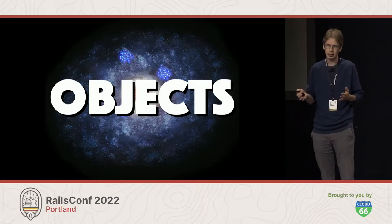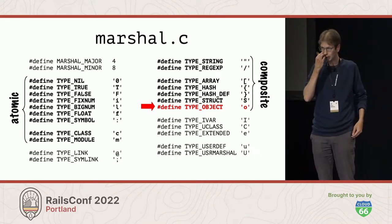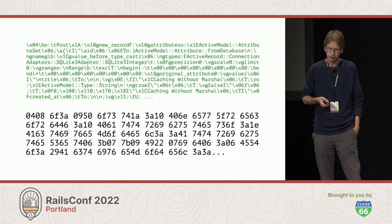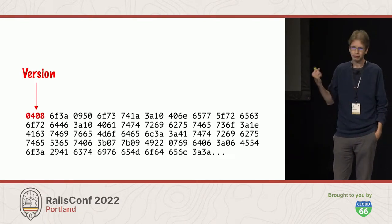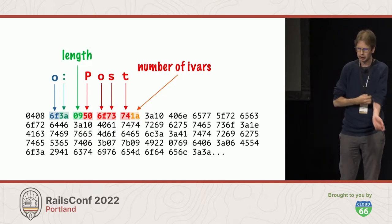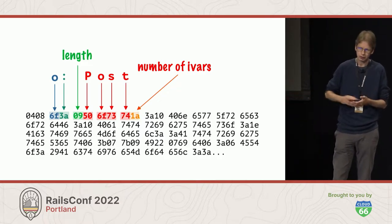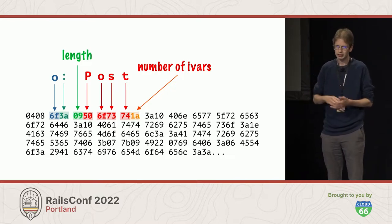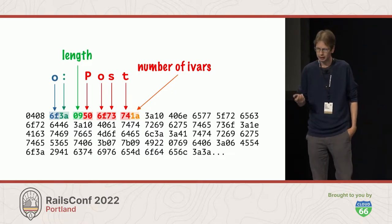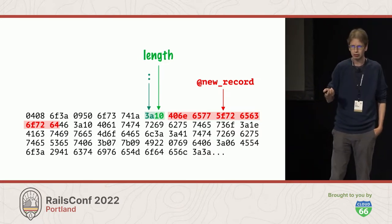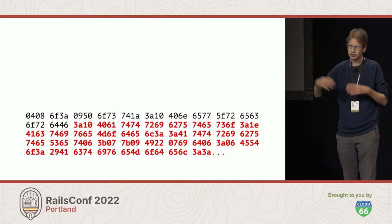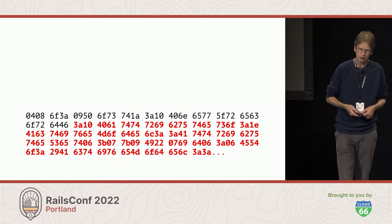How does Marshal encode objects? There's a type called type_object represented by a small character O. If we take that byte string and convert it to hex, the first thing we see is the version — every Marshal-encoded thing starts with this. Then everything else is just an object starting with small O for object. Then it has the class name as a symbol (starting with a colon), a length, the number of instance variables, and then all the instance variables as name-value pairs. Each instance variable can in turn have other objects which can have other instance variables — you can see how this gets very big very fast.